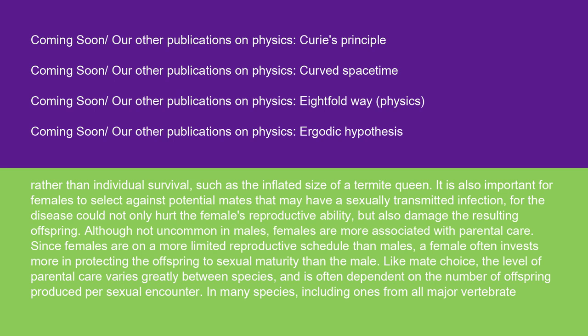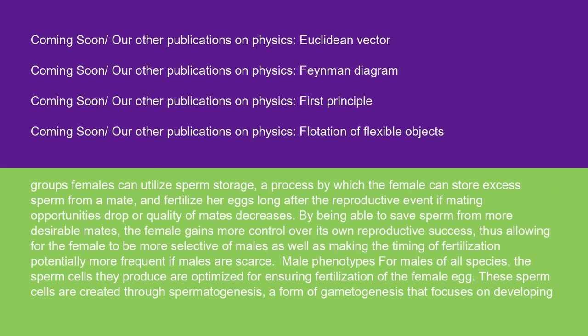Although not uncommon in males, females are more associated with parental care, since females are on a more limited reproductive schedule than males. A female often invests more in protecting the offspring to sexual maturity than the male. Like mate choice, the level of parental care varies greatly between species and is often dependent on the number of offspring produced per sexual encounter. In many species, including ones from all major vertebrate groups, females can utilize sperm storage, a process by which the female can store excess sperm from a mate and fertilize her eggs long after the reproductive event if mating opportunities drop or quality of mates decreases. By being able to save sperm from more desirable mates, the female gains more control over its own reproductive success.